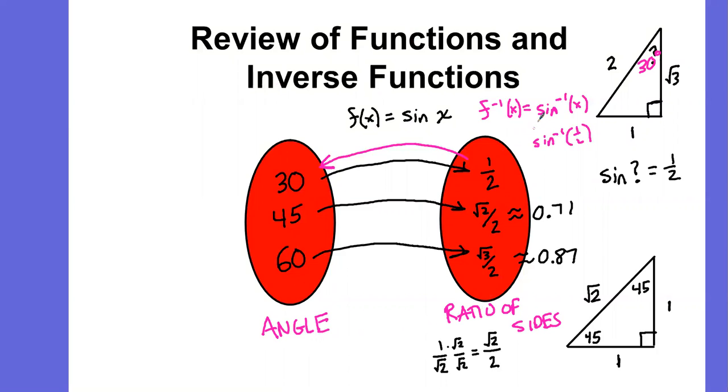Now, if I don't know the angle, I'm going to do the inverse of the ratio of sides. That will give me the angle measure. I've been focusing on sine here.